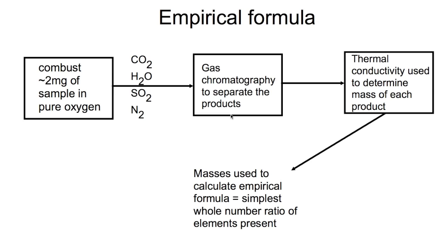Empirical formulae is the simplest whole number ratio of elements present in a molecule. It is often calculated using something called combustion analysis. This is where we combust around 2mg of a sample in pure oxygen, which converts it into carbon dioxide, water, sulphur dioxide and nitrogen. Gas chromatography is then used to separate the products and thermal conductivity is used to determine the mass of each of the products. Once the mass of the products is found, you can calculate the empirical formulae.